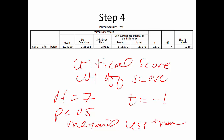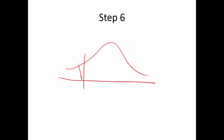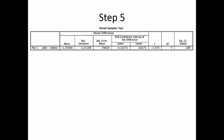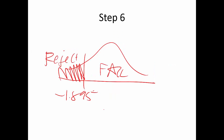Since it's a less-than test, the critical value is negative 1.895. The rejection region is out to the left, and the fail-to-reject region is to the right. Step five: T-found = mean difference ÷ standard error = −1.25 ÷ 0.80 = −1.57. Anything close to −1 is unlikely to reject. Our car only got to −1.57, which didn't cross −1.895, so we fail to reject the null.